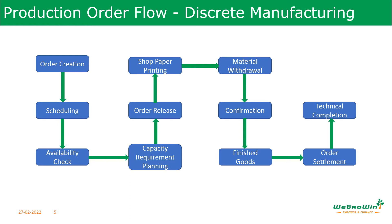A production order is a request to the production department to produce a product at a specific time and in a specific quantity. It specifies the work centers and material components required for production. The creation of a production order automatically creates a reservation for the required material components. Purchase requisitions are created for externally procured material components and services like external operations, and capacity requirements are created for the work centers at which each operation will be executed.